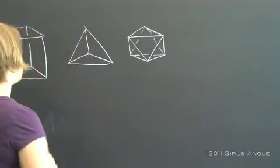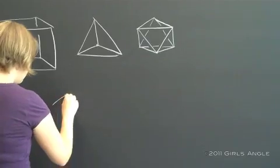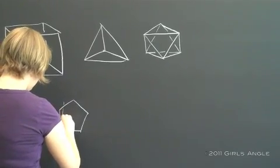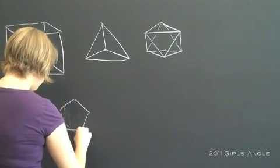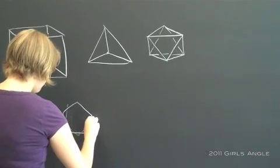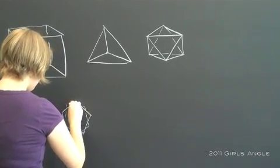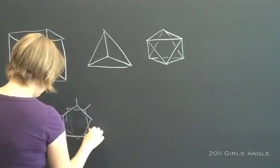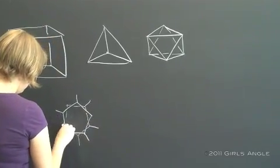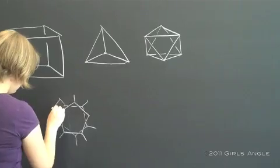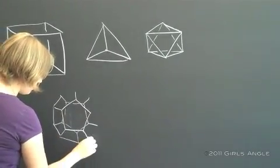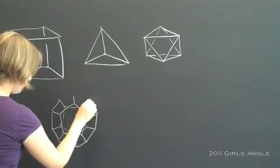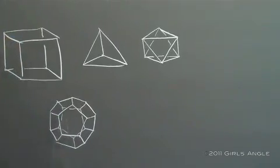And there are two more platonic solids. There's the dodecahedron, which has faces which are pentagons, and there are twelve of these. There's two of them, the front and the back, and then I'm going to add ten more side pieces. When I finish drawing these lines in, hopefully this will start to look like a solid object.